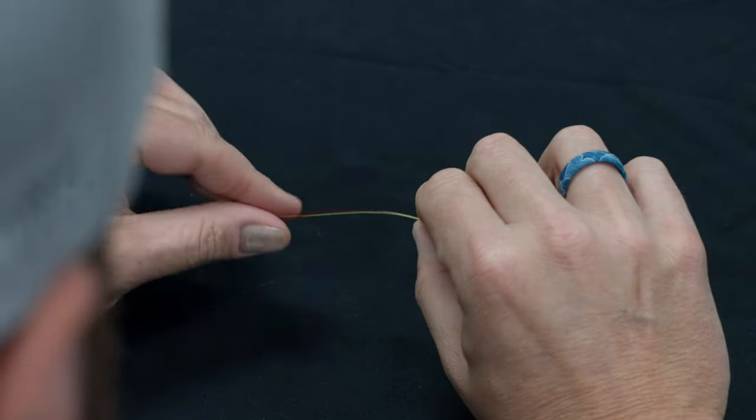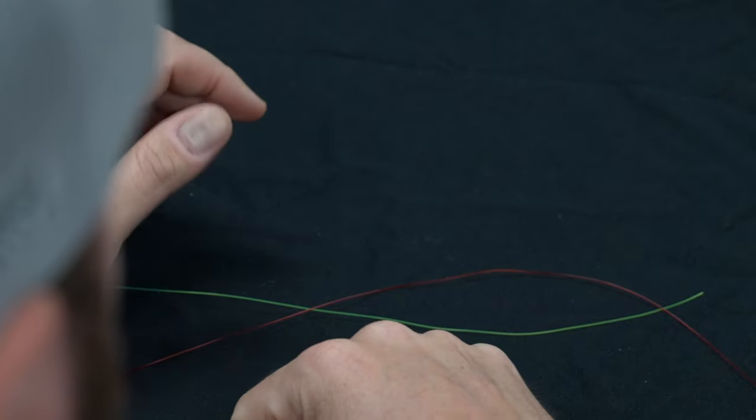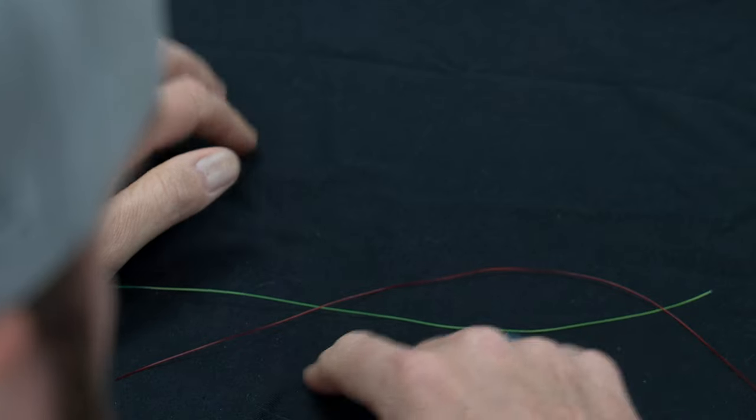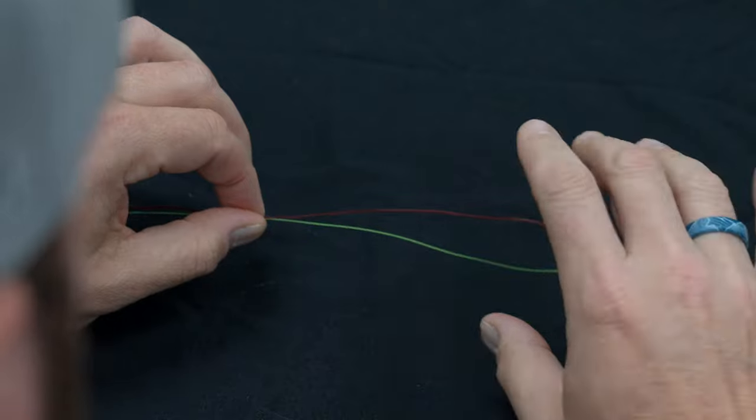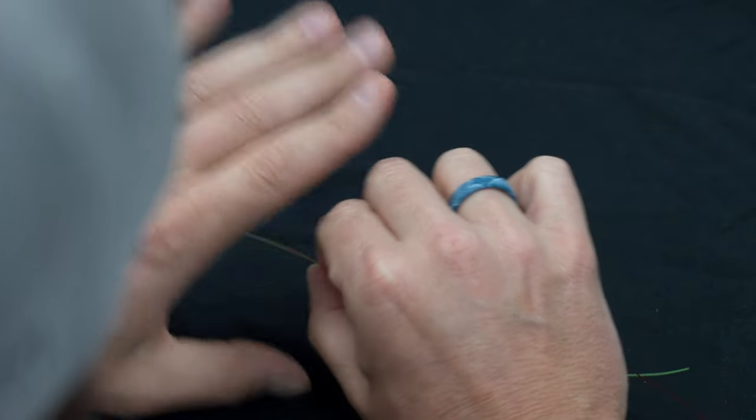You're basically going to start out just like you do with the double surgeon's knot. You're going to overlap the lines and give yourself plenty to work with. Again, I say that in every knot video, but I'm probably going to have a good seven or eight inches here just to give myself a lot of line to work with. You're going to hold this first piece in your left hand, at least for a right-handed guy like myself.